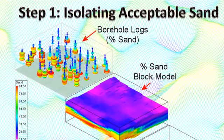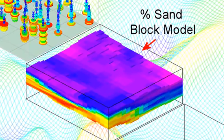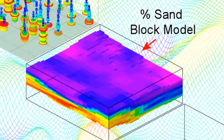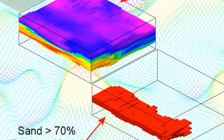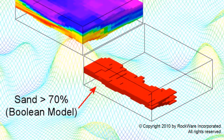We start with some logs depicting relative sand content. Next, the sand content is modeled to create a block diagram showing the interpolated sand percentages for the entire site. Next, we subject the sand to a Boolean filter in which voxels containing less than 70% sand are set to zero. The voxels with more than 70% sand are set to a value of 1.0 and appear as red in the Boolean model diagram. This model represents acceptable sand.